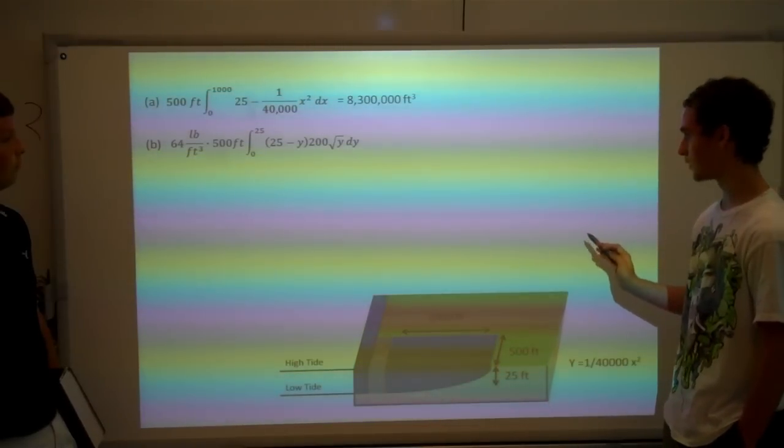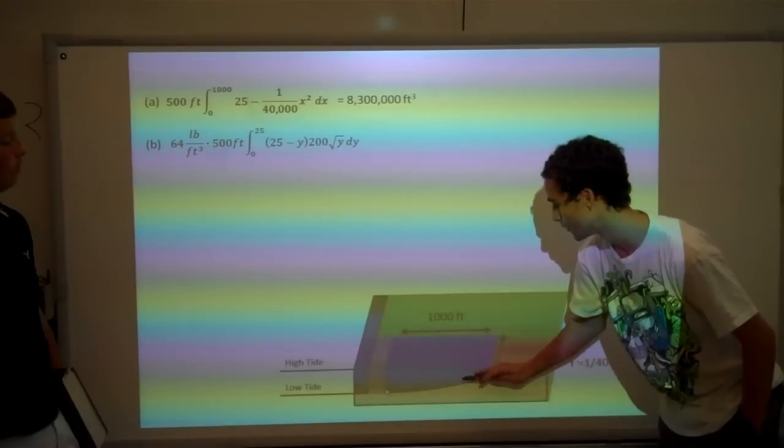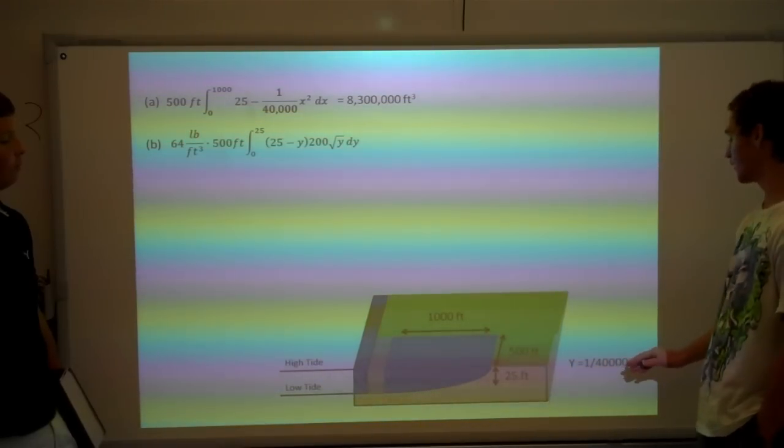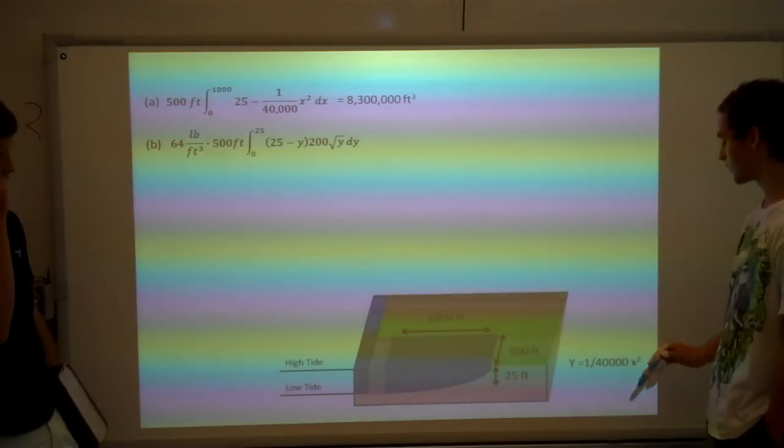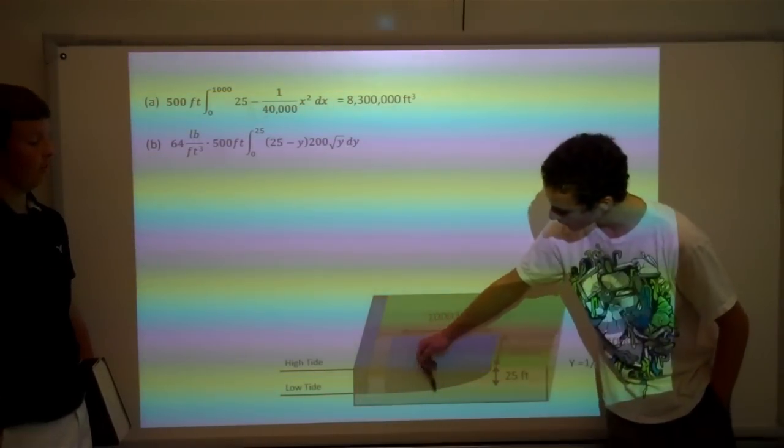So then, with that logic, you want to find the total amount of width that this has at the bottom or in horizontal cross sections. And that's essentially equal to the x coordinate. So then, by solving for x in this equation, you're going to get 200 square root of y, which is the width of these panels.